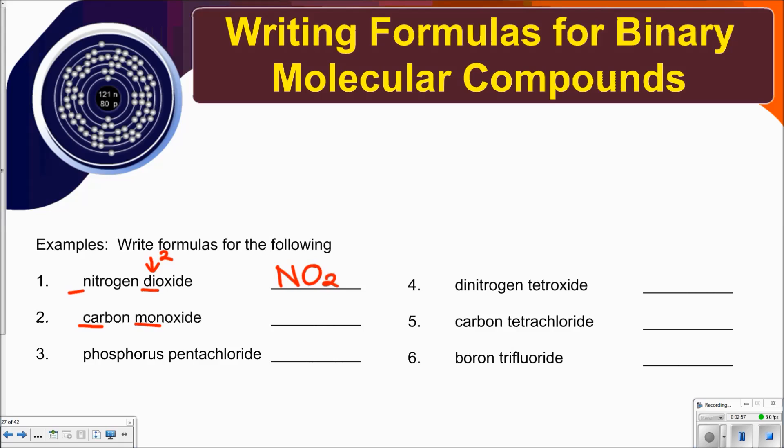The next one, carbon monoxide. That means one carbon, mono refers to one oxygen, so just CO. Phosphorus pentachloride, so there's no prefix on the phosphorus, meaning there's just one. And then penta is the prefix for five, so we know that there are five chlorines.